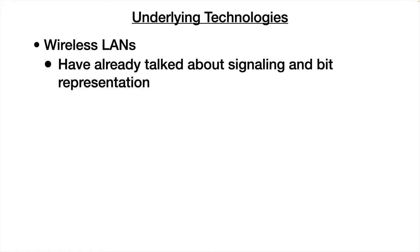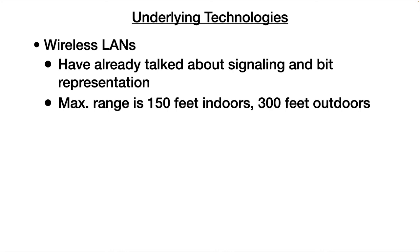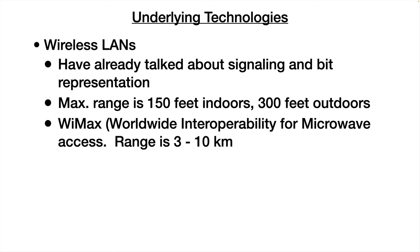We can have wireless LANs. We've already talked about how signaling and bit representation works on a wireless LAN in a previous video. The maximum range is approximately 300 feet without any obstructions. If you're indoors with walls, they typically say it's 150 feet. There's a relatively new standard called WiMAX, with a range of three to six kilometers, and it's often used if you're trying to cover a whole city.